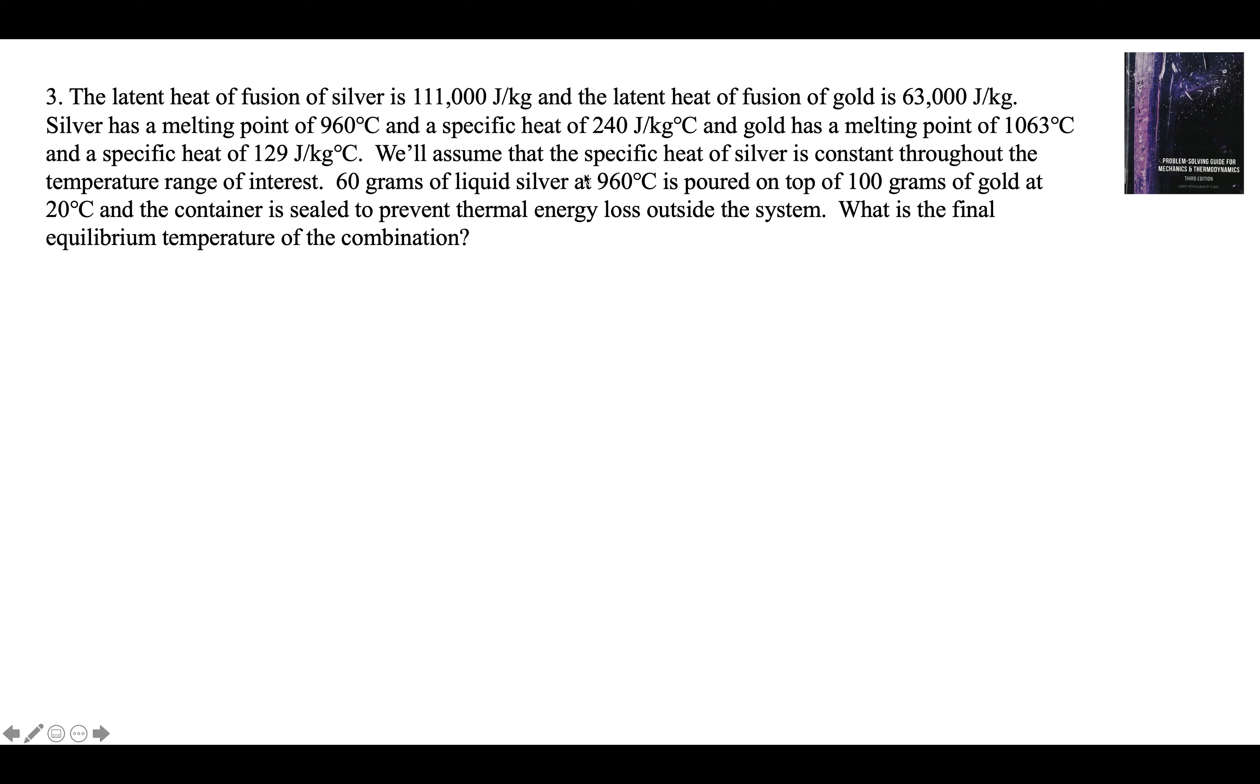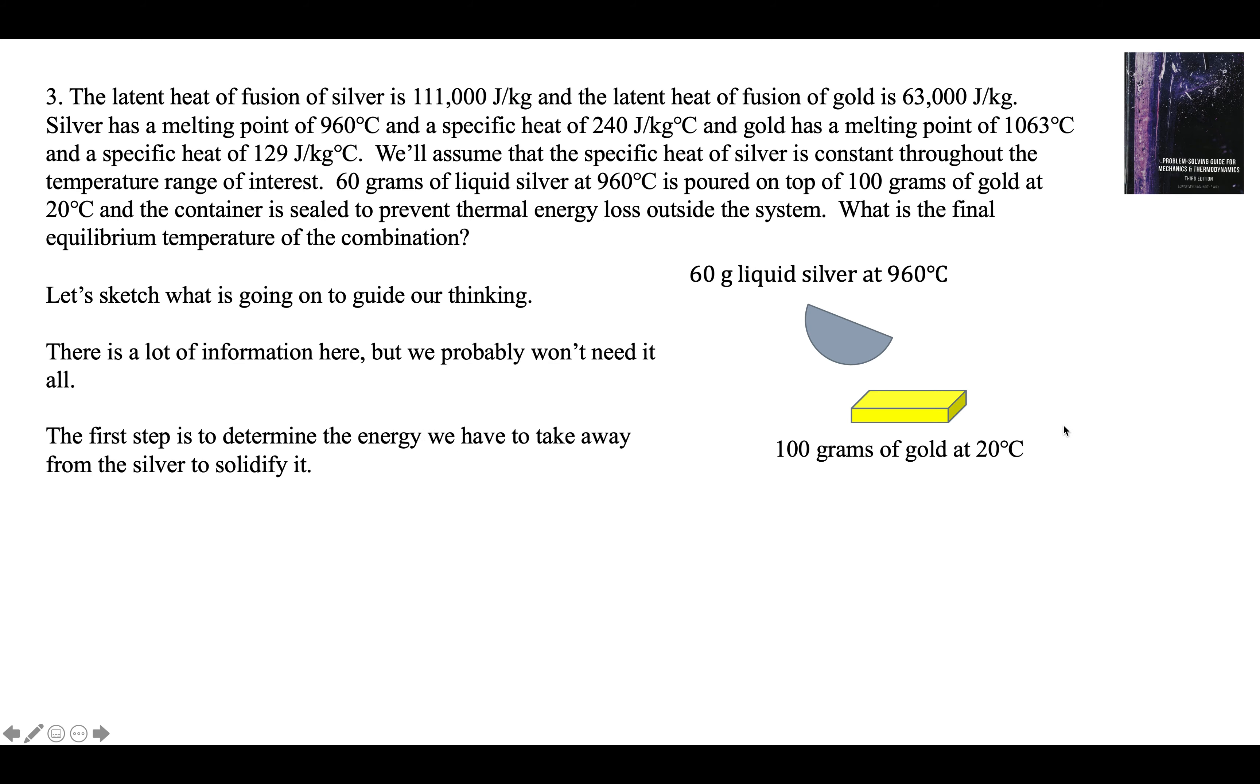So here's the problem. 60 grams of liquid silver at 960 is poured on 100 grams of gold at 20. We're gonna pull out these numbers as we need them. Let's start with a good diagram. Here's some liquid silver in a little ladle at 960 degrees. We're gonna pour it on this gold, 100 grams at 20 degrees. We're gonna get the final equilibrium temperature.